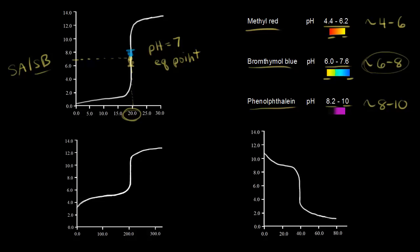For a strong acid–strong base titration, we have a really steep titration curve — from a pH of about 4 to a pH of about 10. So we could have used the other two indicators too: methyl red changes from red to yellow in a range of about 4 to 6, and phenolphthalein changes to magenta somewhere between 8 to 10. Because you have this really steep titration curve, you could use any of the three acid-base indicators to find the equivalence point.